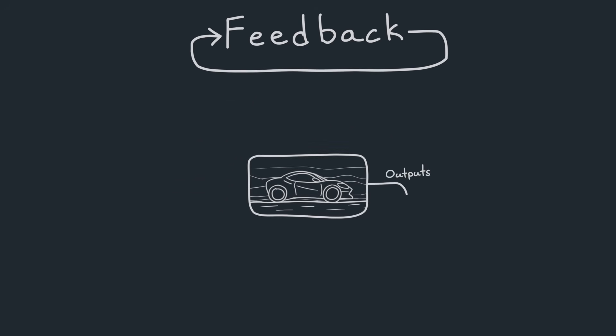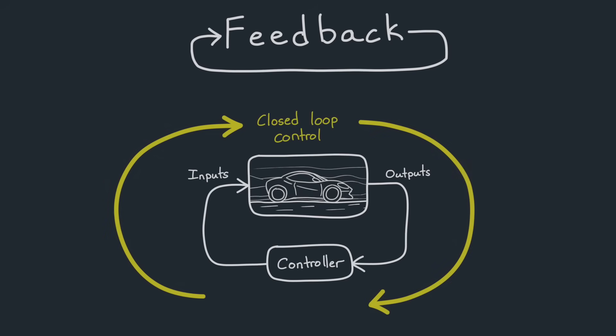For engineered systems, you observe the output, and then a controller uses that information to adjust the inputs accordingly. And this process is known as closed-loop control, as it closes the loop between the system's outputs and inputs. Though it's simple, this concept is the foundation of all autonomy and automation.